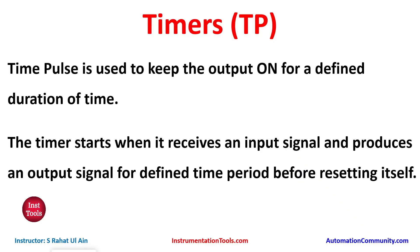Time Pulse is used to keep the output on for a defined duration of time. A timer starts when it receives an input signal and produces an output signal for a defined time period before resetting itself. It means when the input is on, the output should remain on for a certain period of time — for example, five seconds or one hour. In this case we use the timer known as TP, Time Pulse.